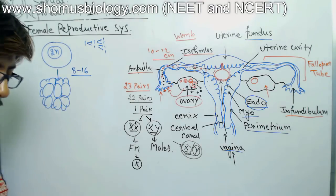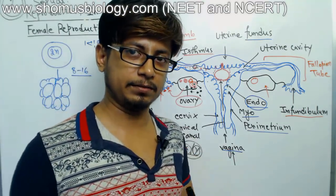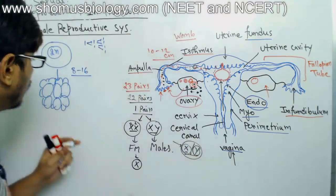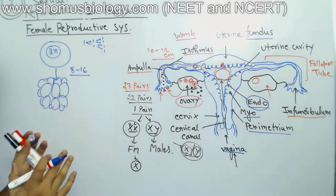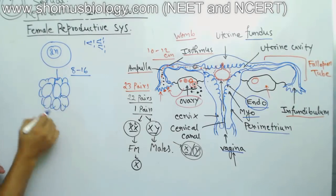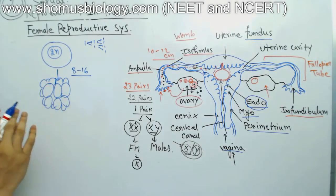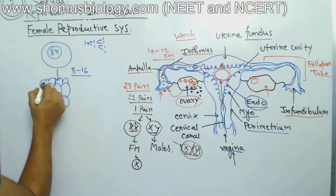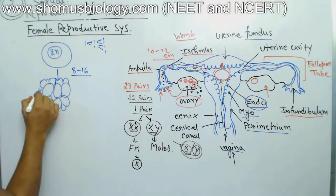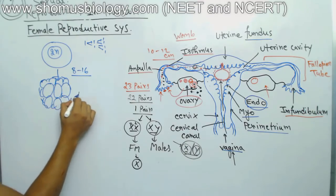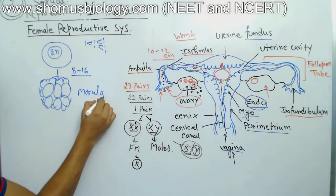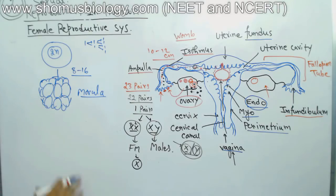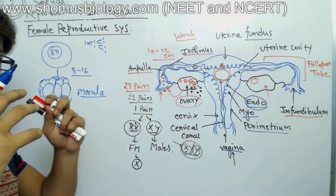The 16-cell stage is very important. At this point the cells are arranging side by side in a stack, forming a compact mass of cells. This state is known as the morula stage.